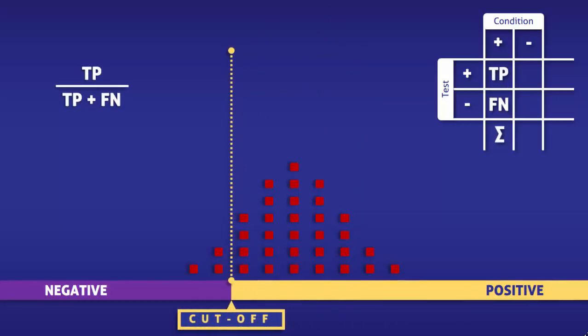So, once more, sensitivity is calculated by dividing the true positives by the total number of patients with the condition, and the greater the proportion of true positives, then the greater the sensitivity of the test.